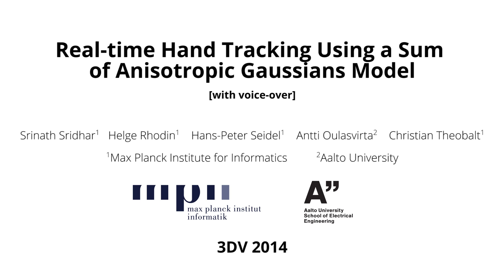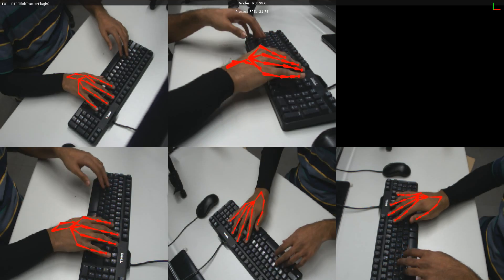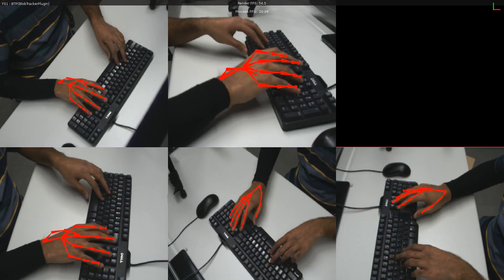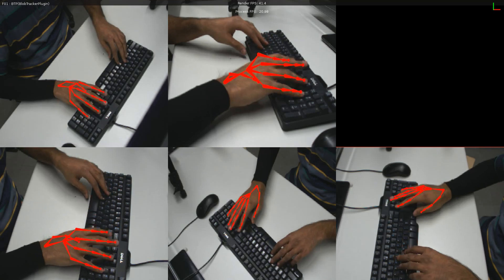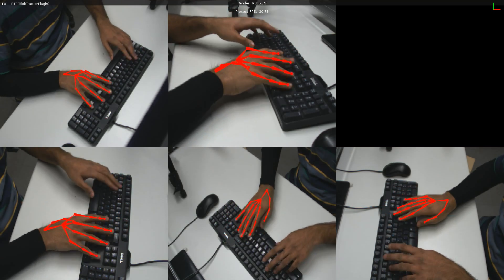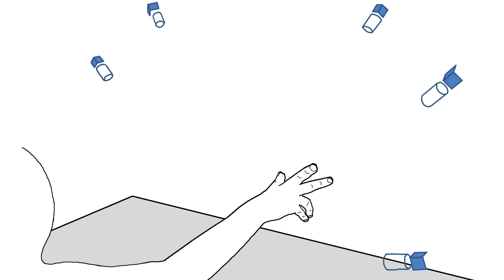Real-time hand tracking using a sum of anisotropic gaussians model. We present a method for real-time tracking of articulated hand motion using a sum of anisotropic gaussians model. Our camera setup consists of five RGB cameras that capture the scene at 60 frames per second.